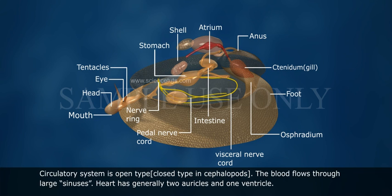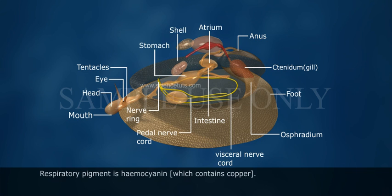The circulatory system is of the open type, but closed type in cephalopods. Blood flows through large sinuses. The heart generally has two auricles and one ventricle. The respiratory pigment is hemocyanin, which contains copper.